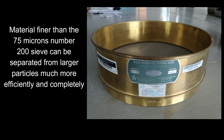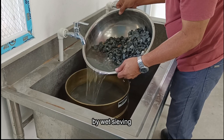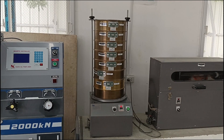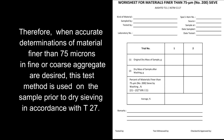Significance and use: material finer than the 75 microns number 200 sieve can be separated from larger particles much more efficiently and completely by wet sieving than through the use of dry sieving. Therefore, when accurate determinations of material finer than 75 microns in fine or coarse aggregate are desired, this test method is used on the sample prior to dry sieving in accordance with T27.